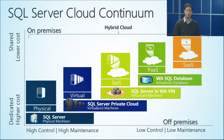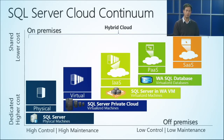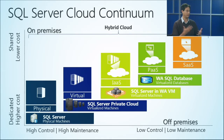Then you move one more step into what we call Platform as a Service. Here the difference is that instead of having access to a virtual machine, you have access to a database — the level of abstraction changes from the virtual machine to a single database. The official name for this is Windows Azure SQL Database. We virtualize the database and take care of many of the maintenance operations, but the level of control you have is lower — you have access to the database but not the underlying maintenance operations.